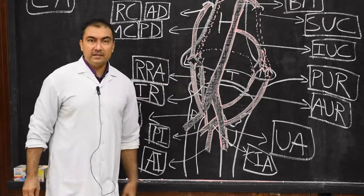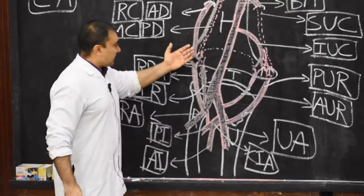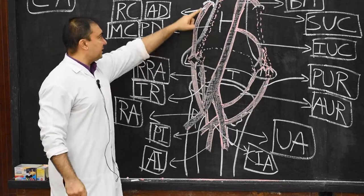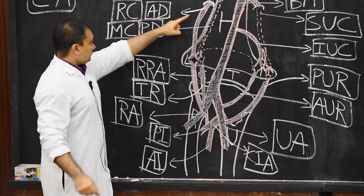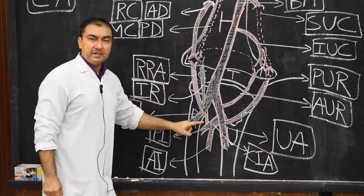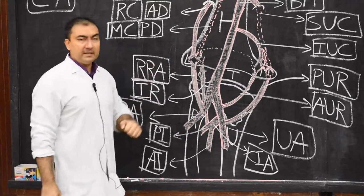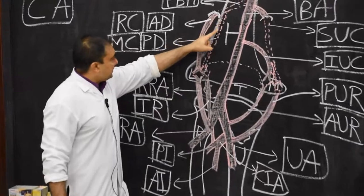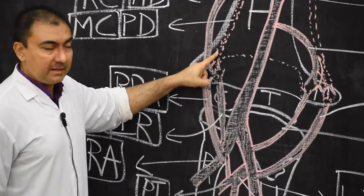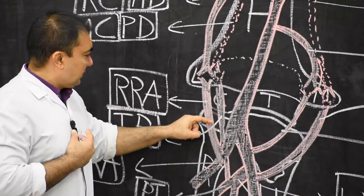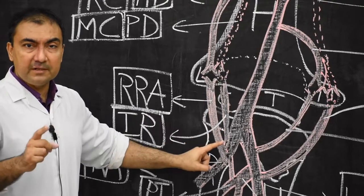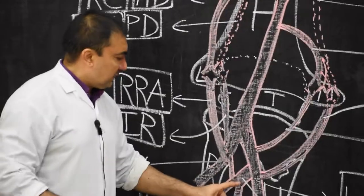Here we finish the lateral epicondyle — anastomosis in front and behind. In front of the lateral epicondyle: anterior descending or radial collateral artery (branch of profunda brachial) from above, and radial recurrent artery (branch of radial artery) from below. Behind the lateral epicondyle: posterior descending or middle collateral artery (branch of profunda brachial) from above, and interosseous recurrent artery (branch of posterior interosseous artery, which is a branch of ulnar artery) from below.